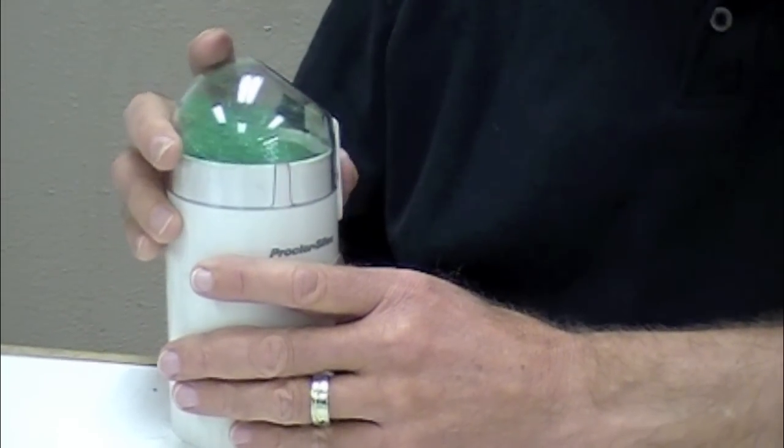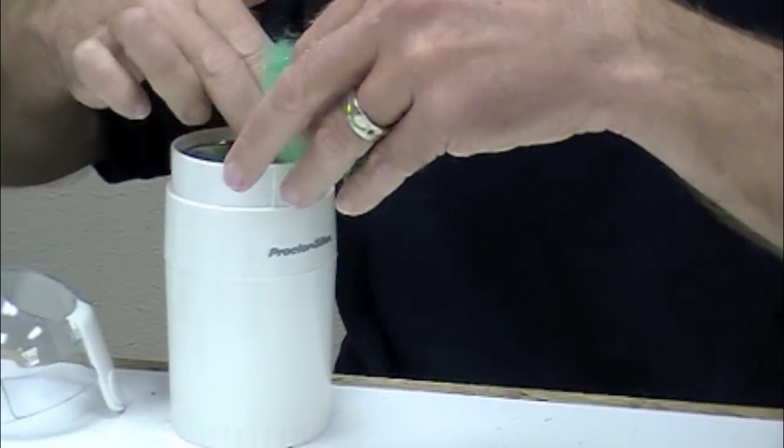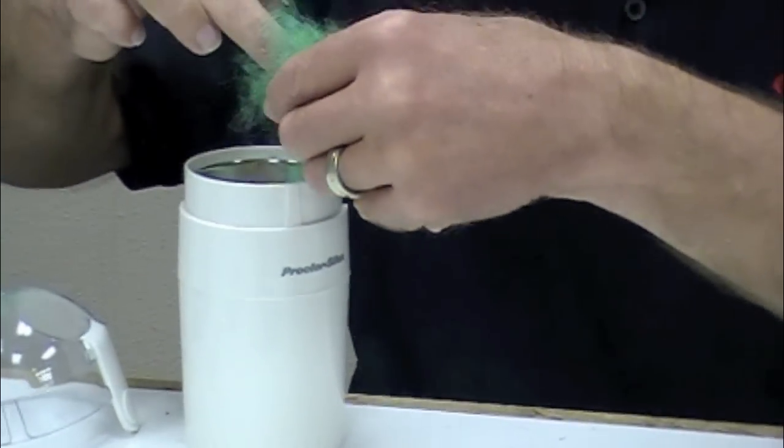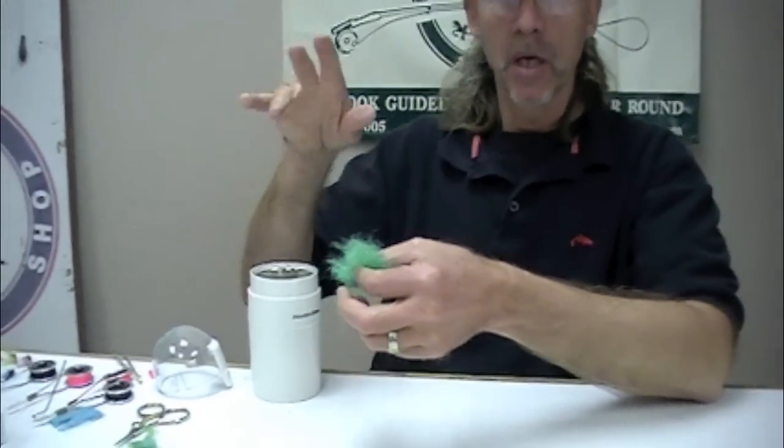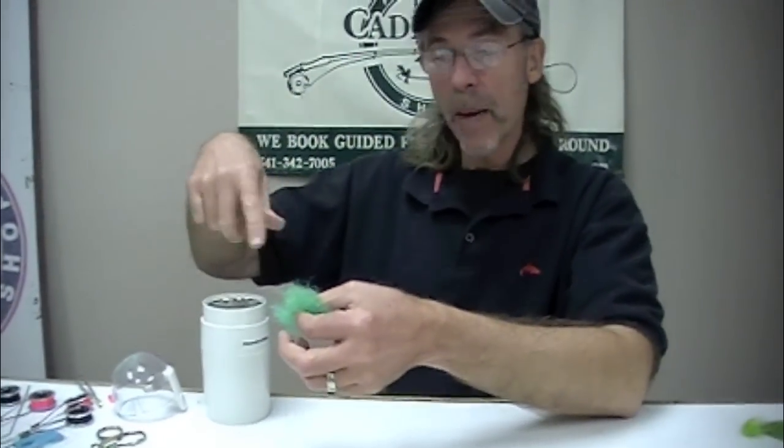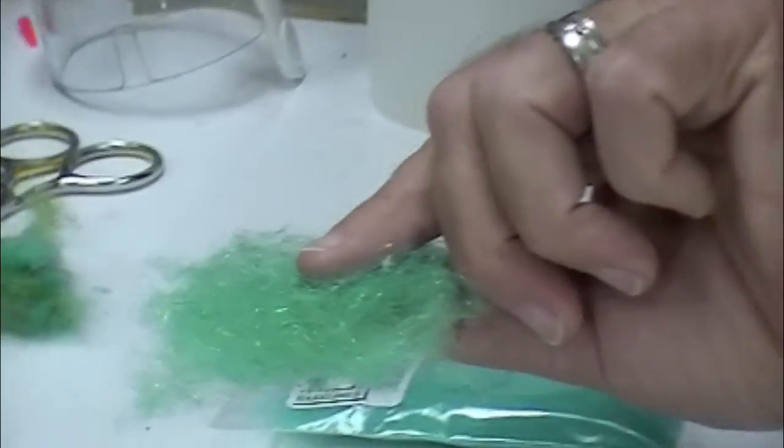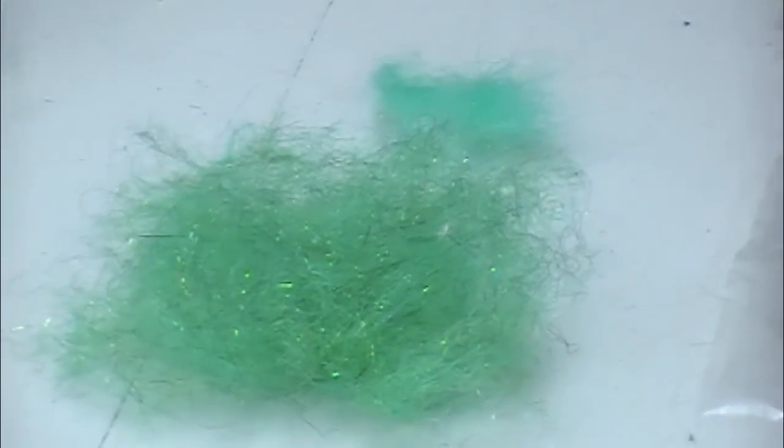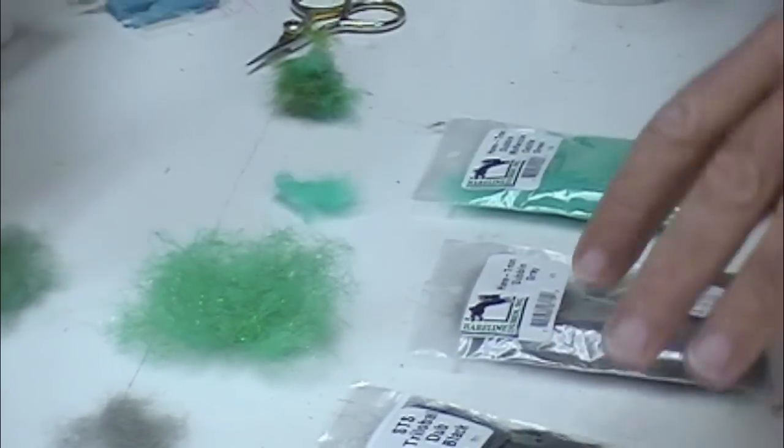One thing you don't want to do is get too much fur in this blender, because it will wad up. And if you use Angora Goat, you need to trim the fibers, because if the fibers are too long, they'll wrap around the post. But here's the color you get. And you see it's different than any of these.